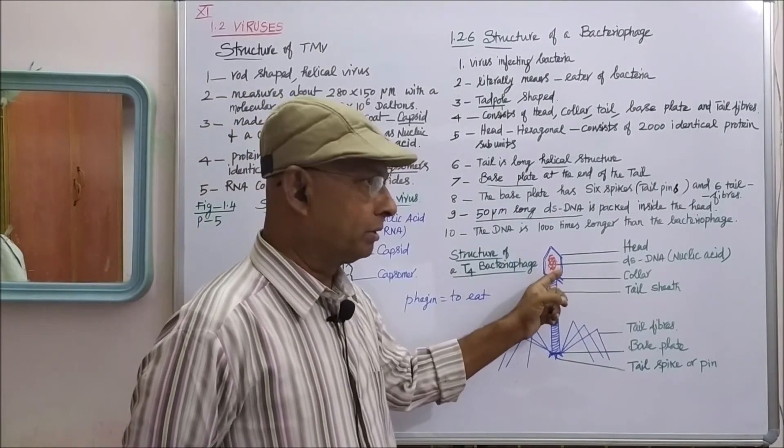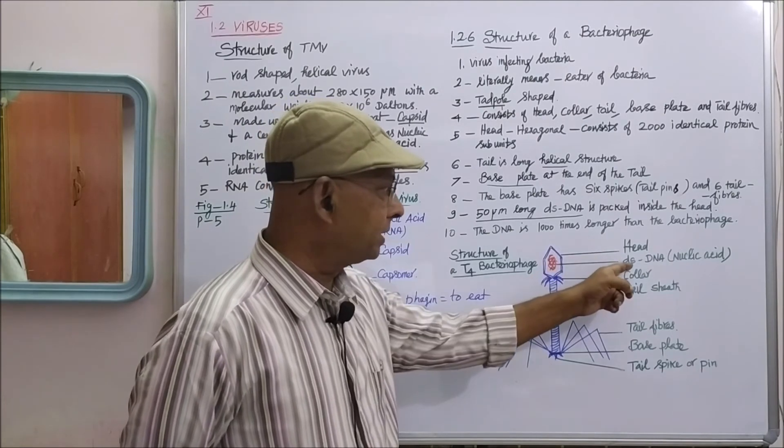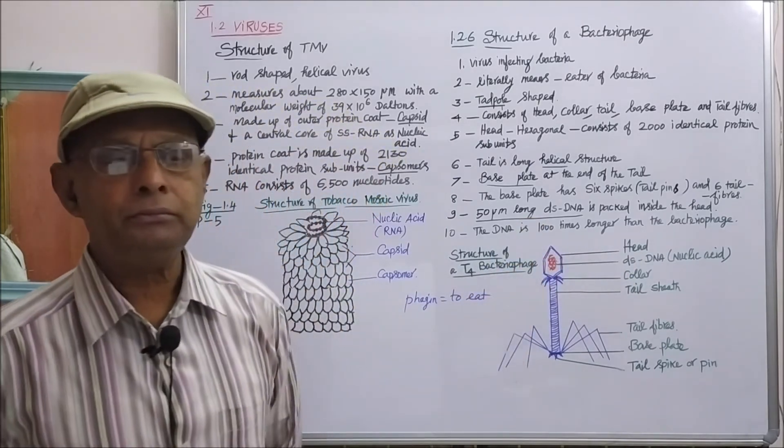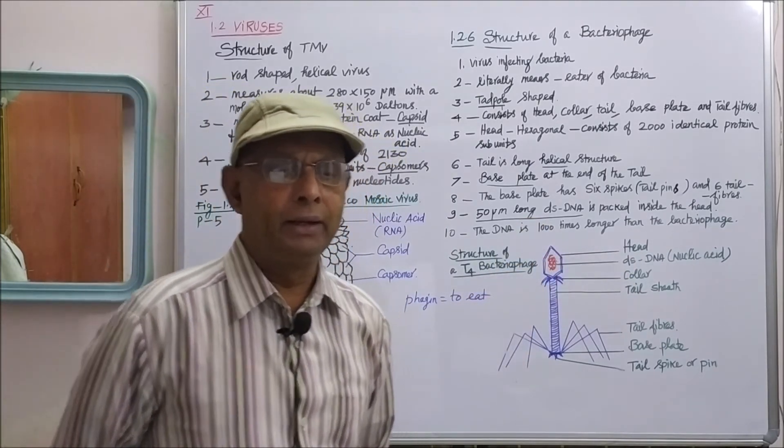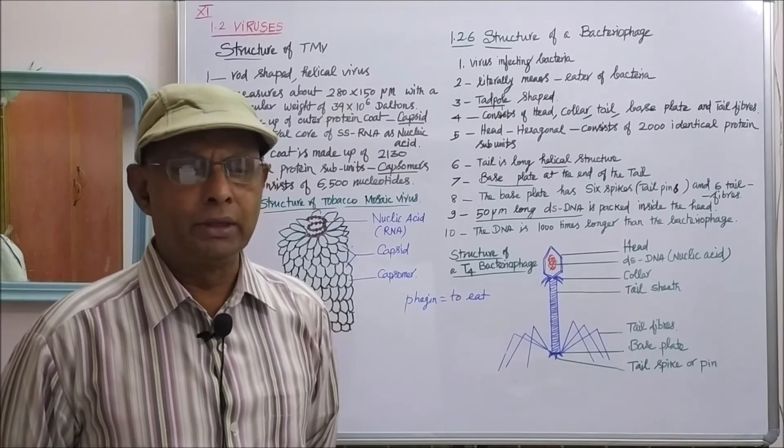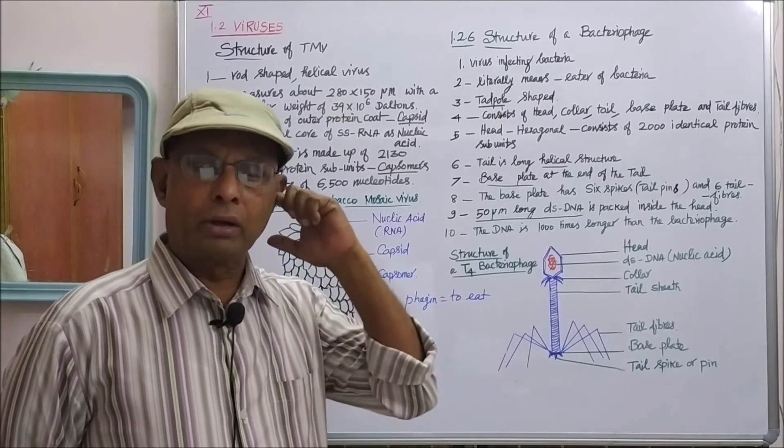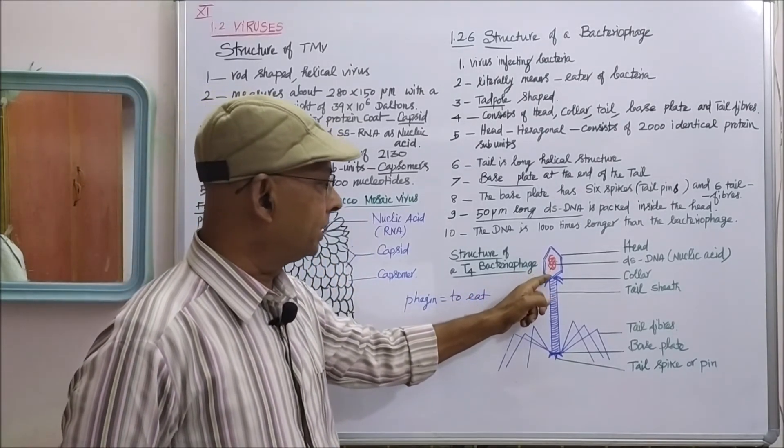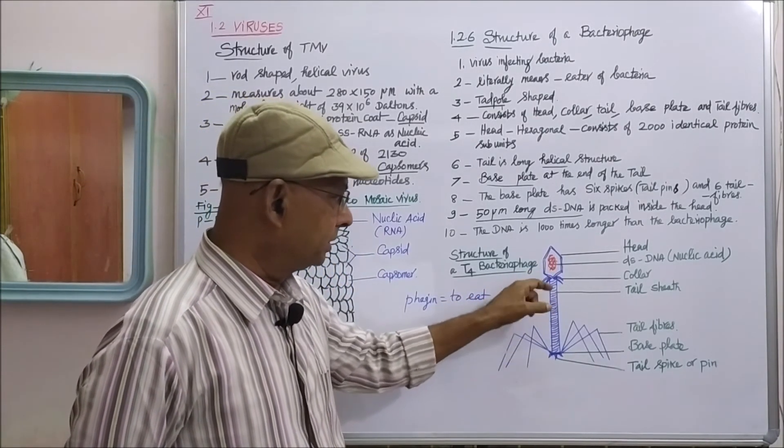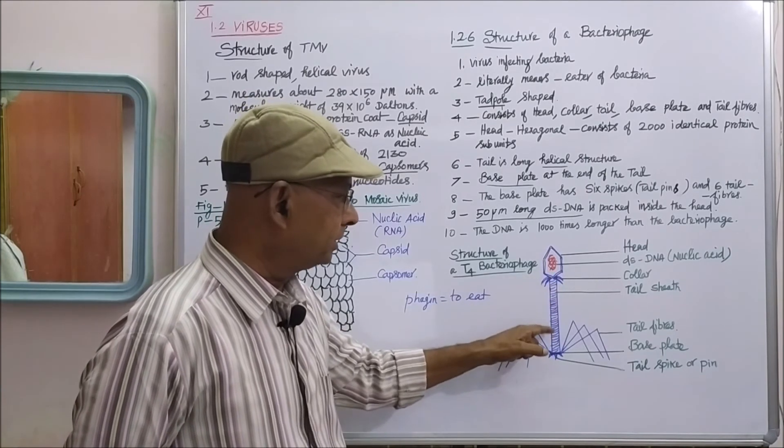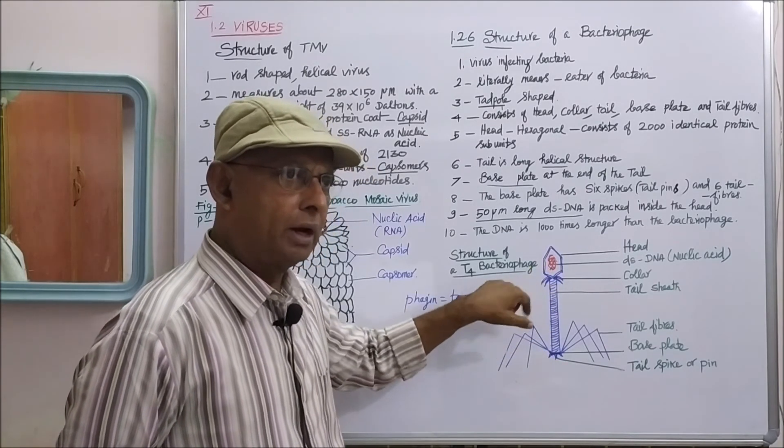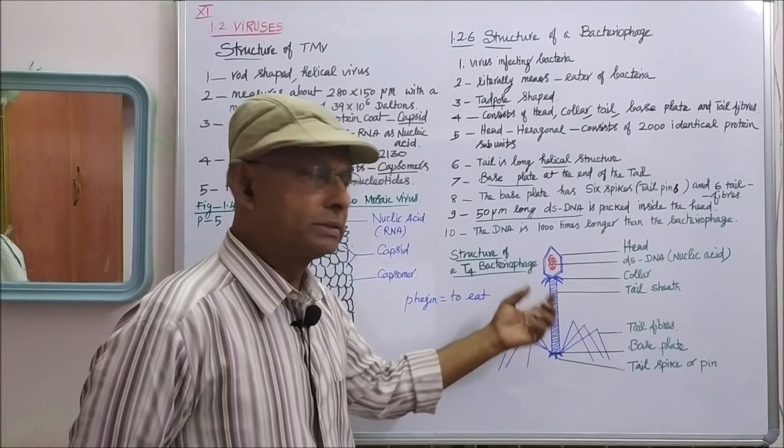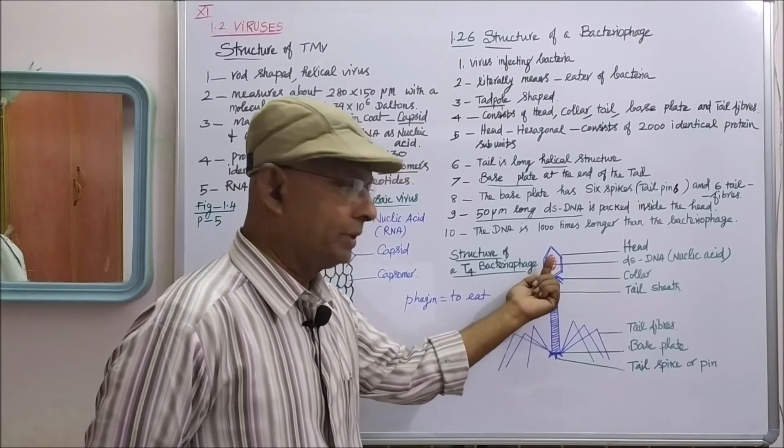The tail is a long helical structure which includes a tubular core inside and is connected to the head of the bacteriophage. The tail consists of two structures: outer tail sheath and inner central core. The central core alone is connected with the head by means of a collar.